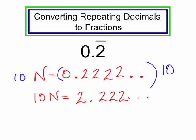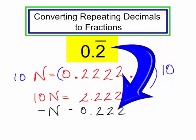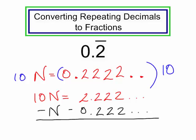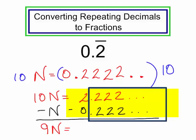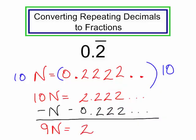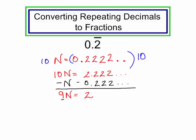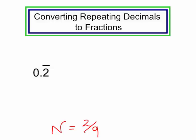Now I'm going to subtract n from both sides. From the left side I subtract n; from the right side I also subtract n, and n was 0.222. 10n minus 1n is 9n. On the right side, 2.222 minus 0.222 is just 2. To solve this for n, divide both sides by 9 — n is equal to 2 ninths. So 0.2 with a bar over the 2 is equal to the fraction 2 ninths.